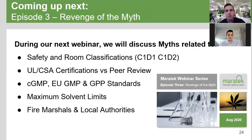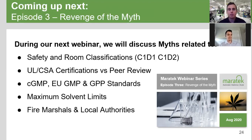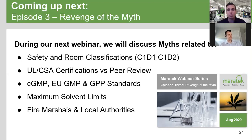Before we get into Q&A, a little sneak peek: up next is Episode Three, 'Revenge of the Myth' — hopefully you like our Star Wars naming theme. During the next webinar we'll discuss myths related to safety and room classification: C1D1 vs. C1D2, whether you need C1D1 or C1D2 equipment and room build-out, UL/CSA listings, CE for Europe, and what's really setting you up for long-term success. We'll also cover myths around cGMP, EU GMP, and GPP standards, maximum solvent limits, dealing with fire marshals and local authorities, and ways to work within those maximum solvent limits. We're looking at late August — we'll send an update in a couple weeks.